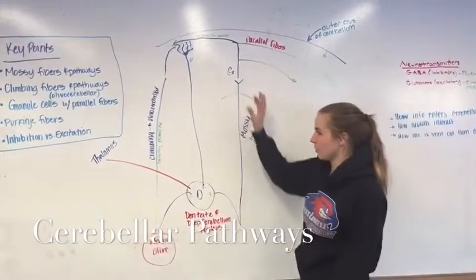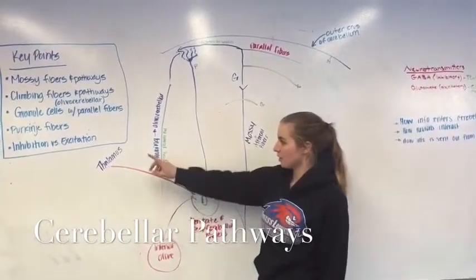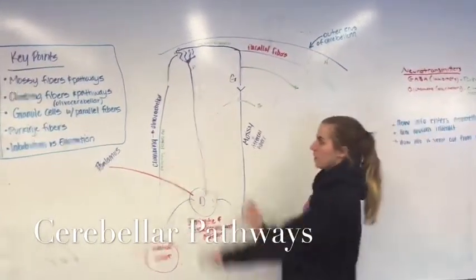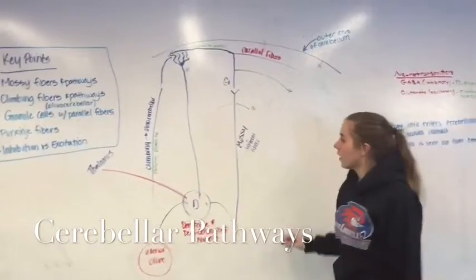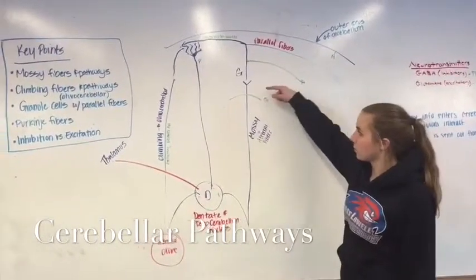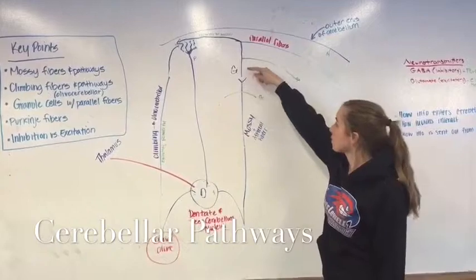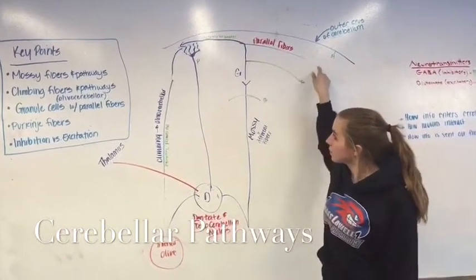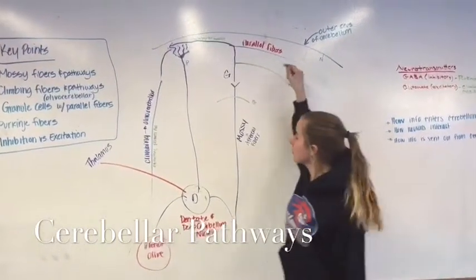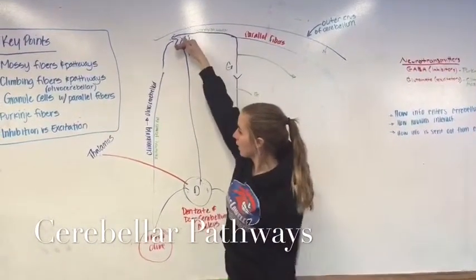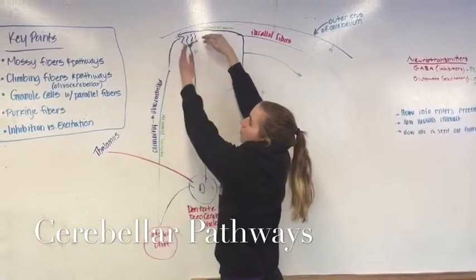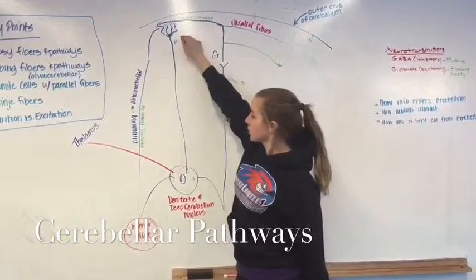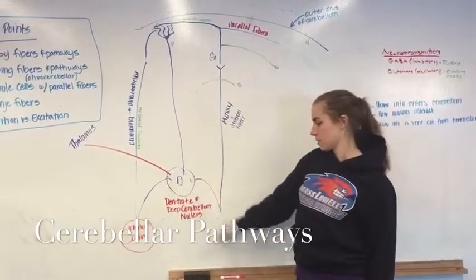Coming into the cerebellum, you have a couple of tracks. You have the climbing fibers, which is the olivocerebellar, and the mossy fibers, both coming into the cerebellum. The mossy fibers are going to come up and become the granule cells, which are going to split into the parallel fibers at the molecular level. Then the climbing fibers also come over, and together they both affect the Purkinje cells, which are going to feed back to the deep cerebellar nucleus.